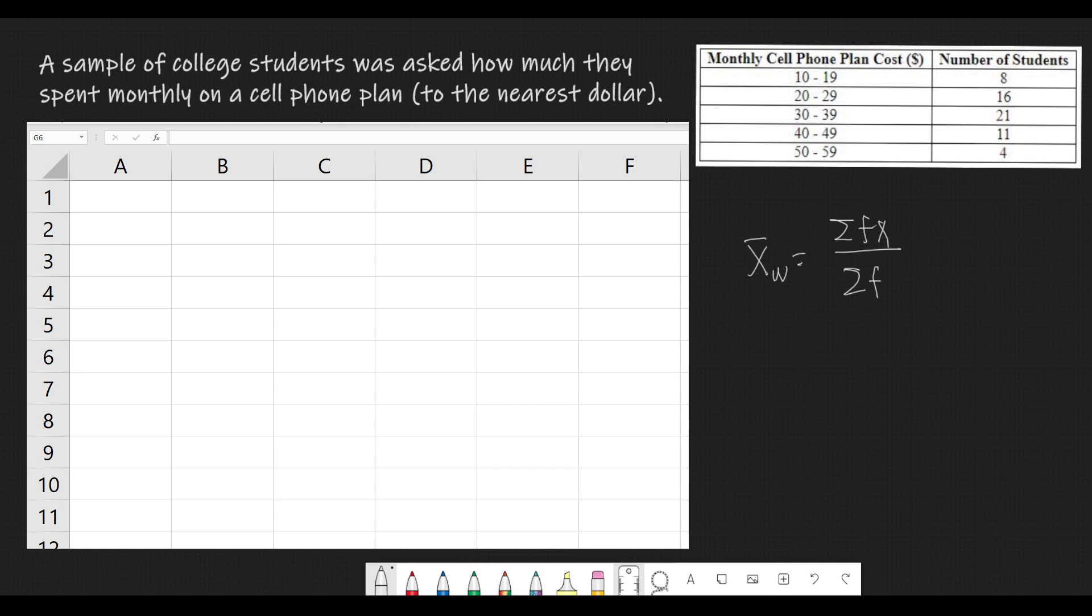To solve this, we still need to use the formula summation of f times x divided by summation of f to compute for the mean data.